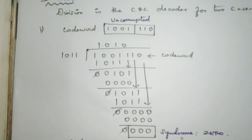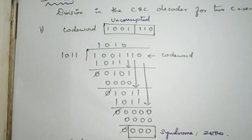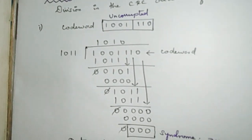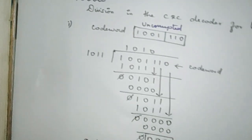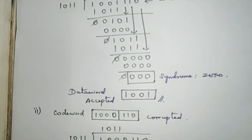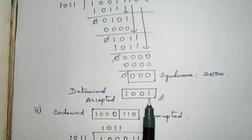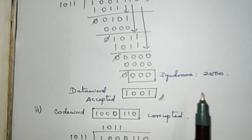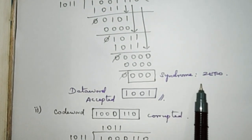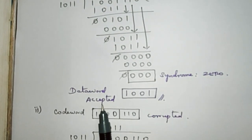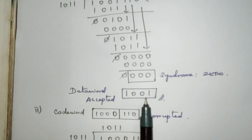The syndrome is the remainder we get through this division. When the syndrome is fully zero, the data word is accepted. If the syndrome is non-zero, the data word will get discarded.